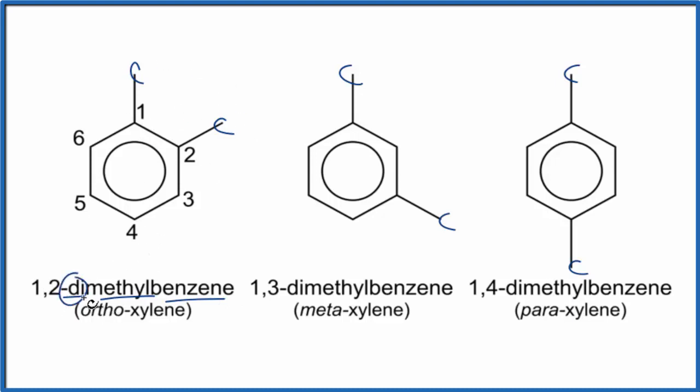Then we have the benzene ring. This is also called ortho-xylene - this is the structural formula for ortho-xylene. If we had the methyl groups on the one and the three...